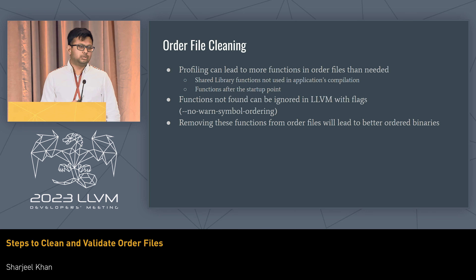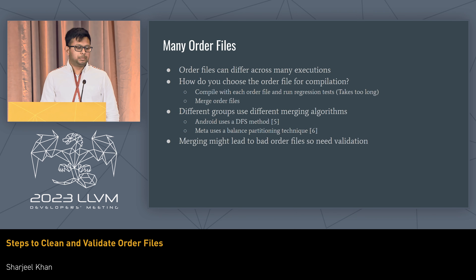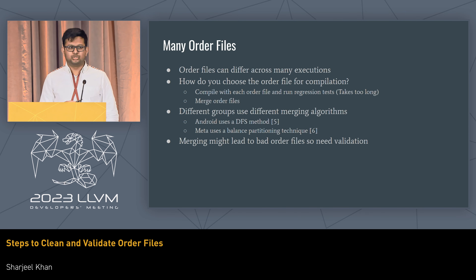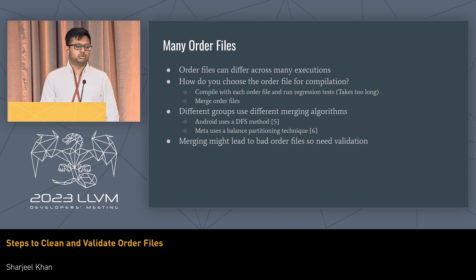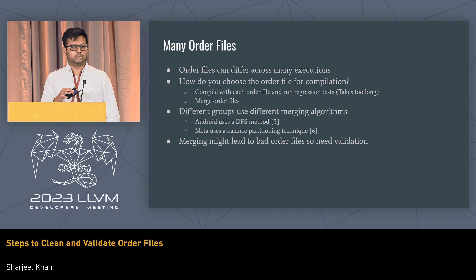This is only for one order file, but if you run an application on different devices, you may get different order files. Do you just choose one? Do you go one by one checking which one is best? Or do you merge them? In Android, we built a graph-based system to combine order files.